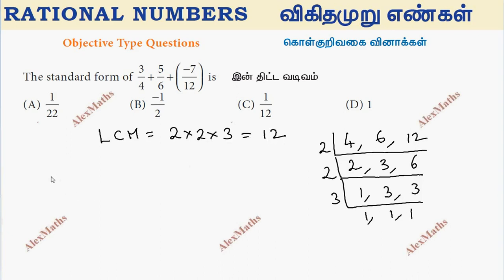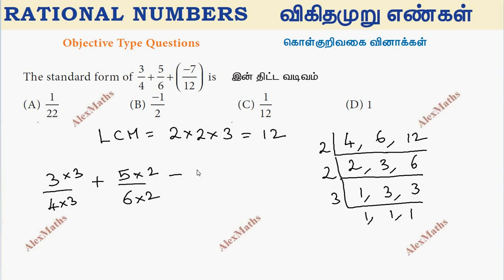First number 3 by 4. That is 3 into 3 into 3. 2, 2, 12.